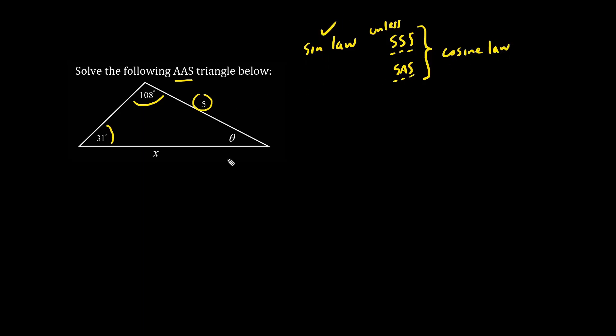So we're going to use the sine law. Let's find theta by adding three angles. We know that 31 plus 108 degrees plus theta equals 180 degrees. So we have theta equals 180 minus 108 minus 31, which is 41 degrees.